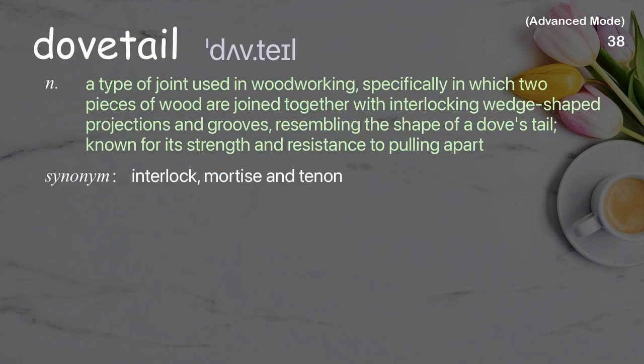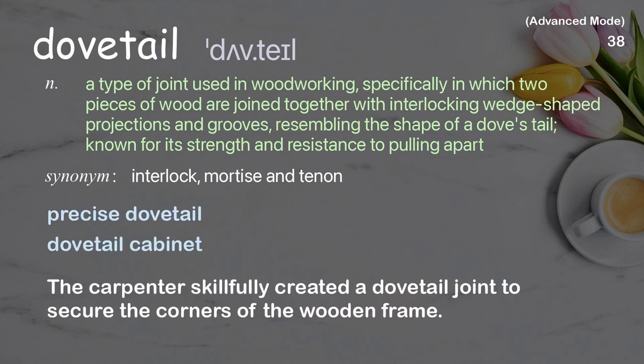Dovetail: a type of joint used in woodworking in which two pieces of wood are joined together with interlocking wedge-shaped projections and grooves, resembling the shape of a dove's tail, known for its strength and resistance to pulling apart. Examples: precise dovetail; dovetail cabinet. The carpenter skillfully created a dovetail joint to secure the corners of the wooden frame.